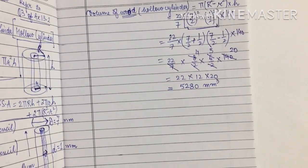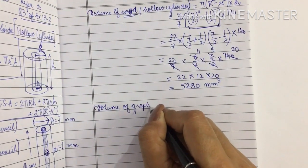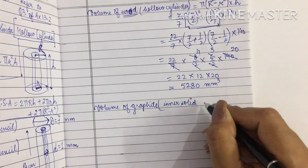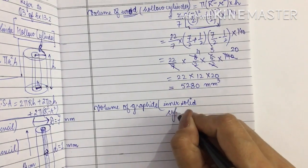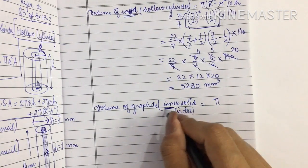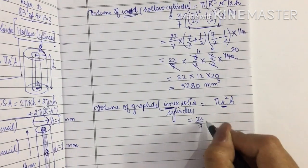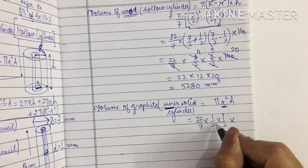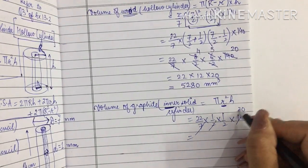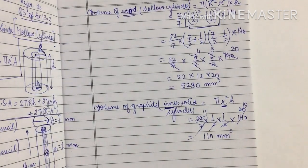For the volume of graphite — graphite is the inner solid cylinder, so we use V = πr²h with small r. Substituting: (22/7) × (1/2)² × 140. Simplifying with cancellations, this comes out to be 110 mm³.